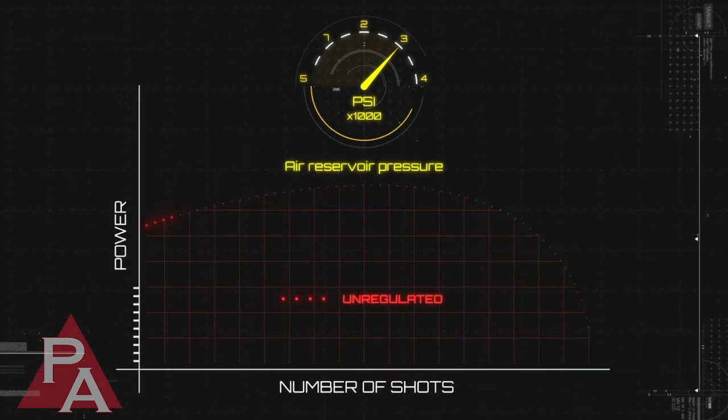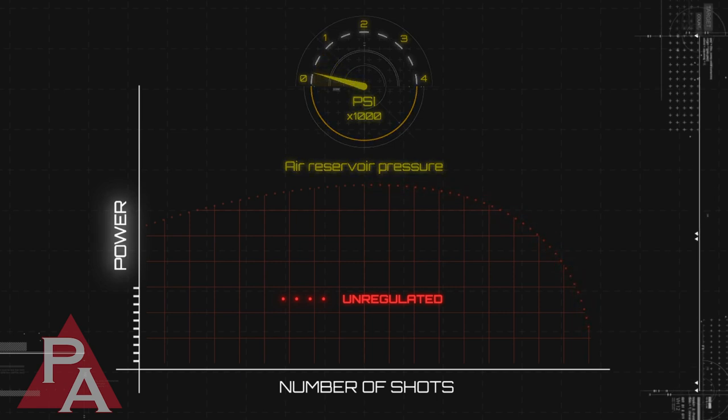Generally, an unregulated PCP's power output will rise to a peak before dropping off to the point it needs recharging. A power output that's dependent on the air rifle's pressure is not ideal because the pellet's downrange point of impact, POI, will alter accordingly.